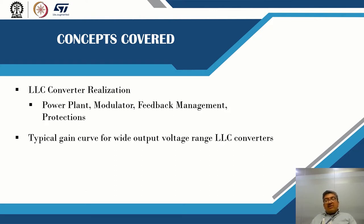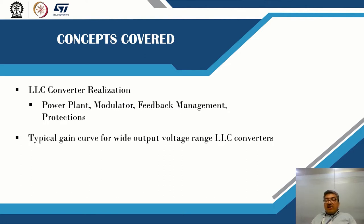Wide output range LLC converters use pulse frequency modulation — the output voltage is a function of the operating frequency. If a very high output voltage is needed, the operating frequency must be very low; if the frequency is too low and entering boost mode, we must be careful not to enter capacitive mode. For very low voltages the frequency must increase, moving away from resonance deep into the inductive zone where losses also increase. We must find a trade-off in the gain curve between operating frequency excursion and achievable voltage span. In certain cases it is possible to achieve a 1:5 voltage span using a scheme we will demonstrate subsequently.